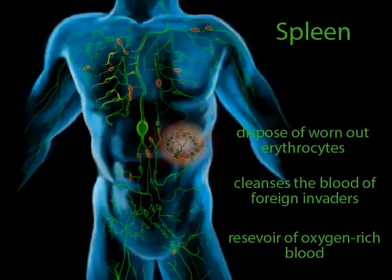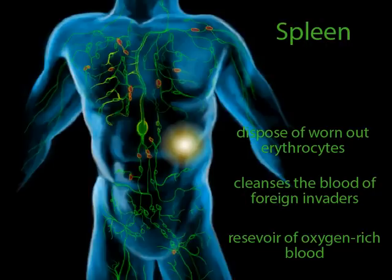Although the spleen is part of the lymphatic system, you can live without it. If your spleen is ruptured due to an injury, it can be removed in a splenectomy, which is often necessary to stop internal bleeding because the spleen is so vascular. Once the spleen is removed, tissues in the liver as well as other lymphatic tissues take over its first two tasks, though the overall function is not as good. As a result, people who have their spleens removed are more susceptible to infections and more sensitive to hemorrhage.